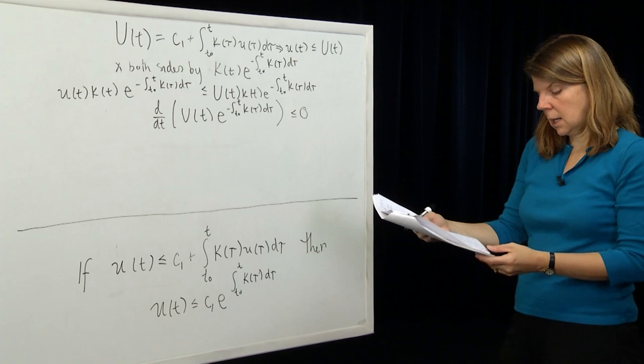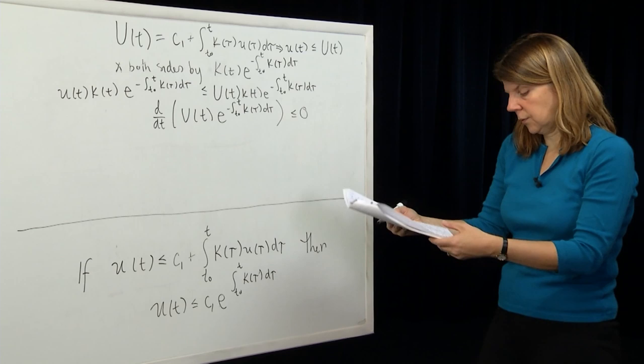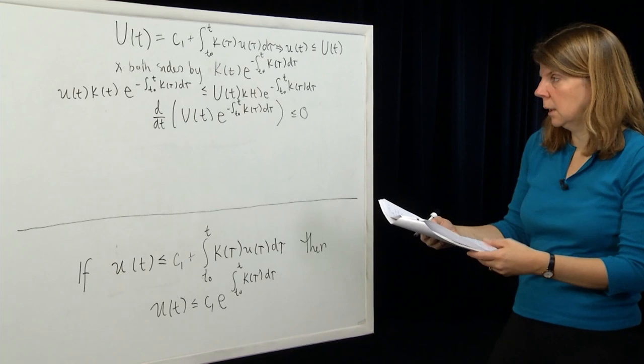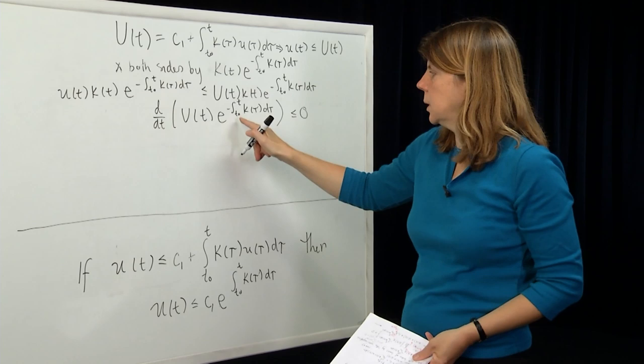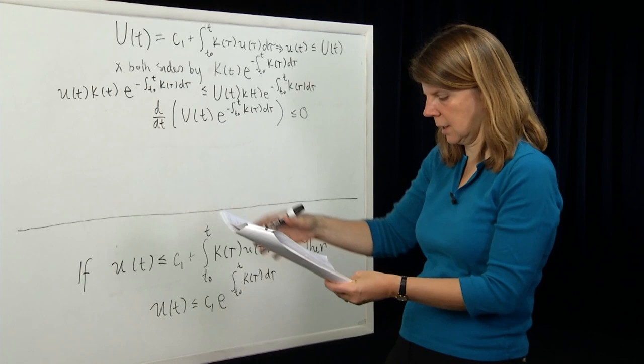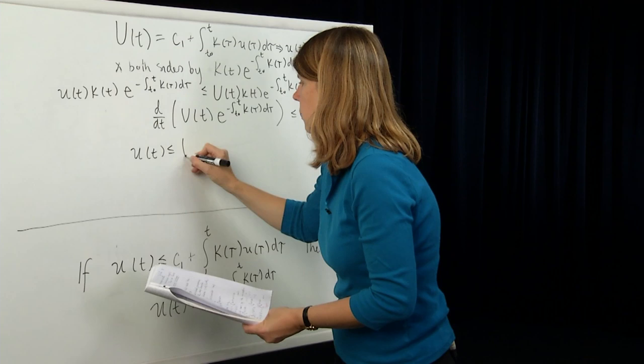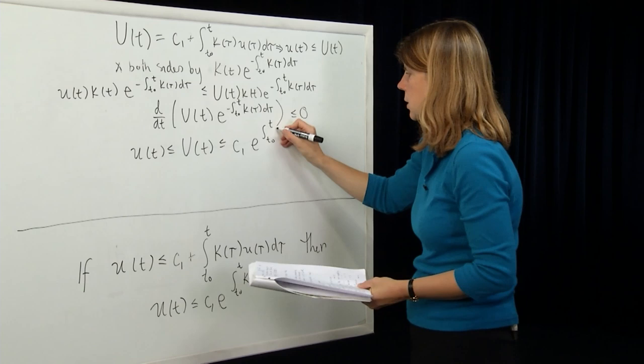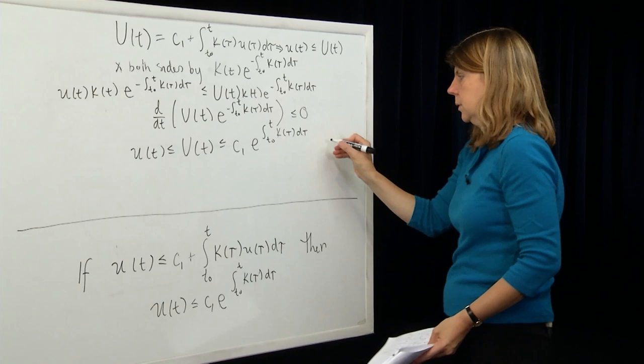Now I can integrate that function between t0 and t. I note that at t0, capital U(t0) from my definition is just equal to c1. So integrating this derivative between t0 and t and following the rules of integration and establishing those bounds, we end up with: little u(t) ≤ capital U(t) ≤ c1 · e^(∫t0 to t k(τ) dτ), which establishes the bound that we need.